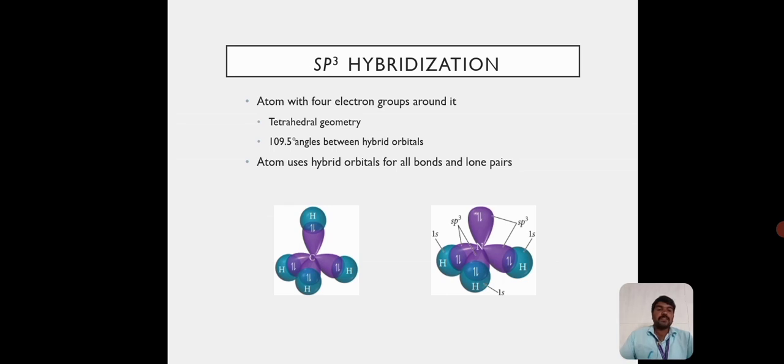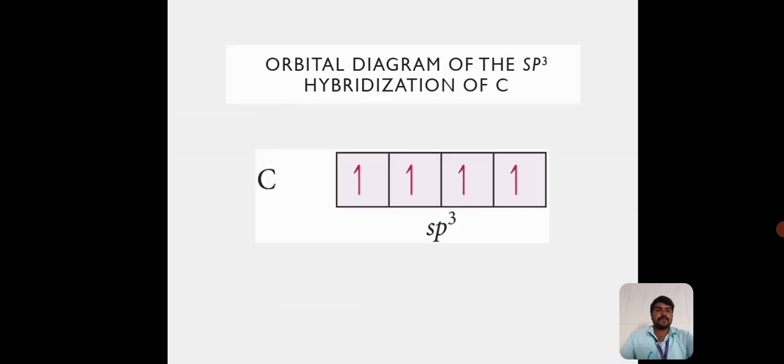Atom with four electron groups around it has tetrahedral geometry, with 109.5 degree angles between the hybrid orbitals. Atoms use hybrid orbitals for all bonds and lone pairs. The SP3 hybridization of carbon. Carbon has the SP3 hybridization. The first shell is the S and then three P orbitals.